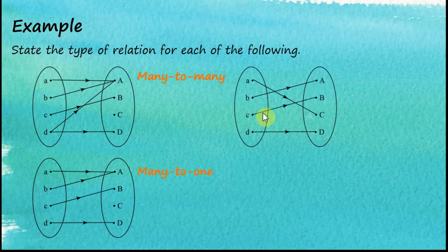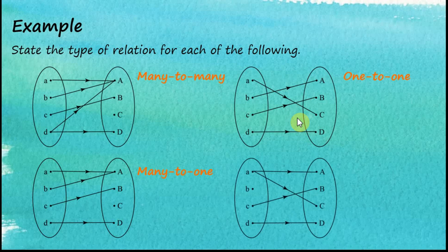How about this one? Obviously, this is one-to-one — one object, one image, one object, one image. And the last one, we can see that we have one object mapped to two images. So this is one-to-many.